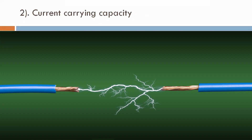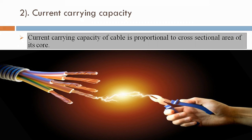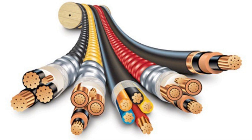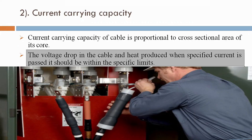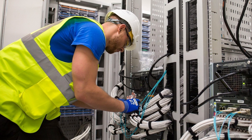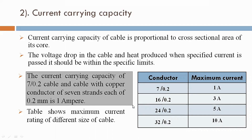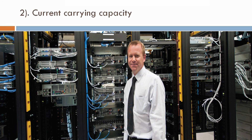Now second point: current carrying capacity. Current carrying capacity of cable is proportional to the cross-sectional area of its conductor. The voltage drop in the cable and heat produced when specified current is passed should be within the specific limit. The current carrying capacity of 7/0.2 cable — a cable with copper conductor pair of 7 strands each of 0.2 mm — is 1 ampere.